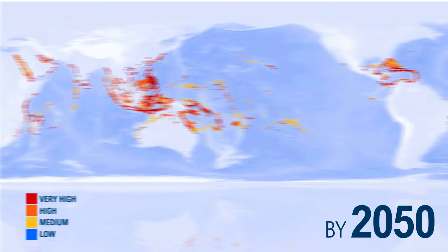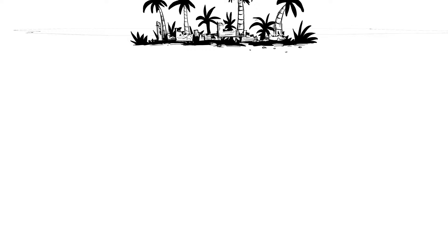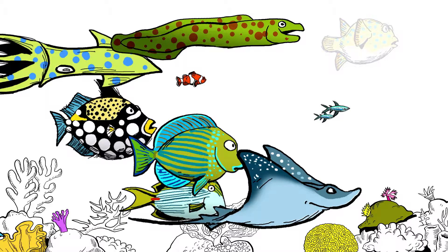Without coral reefs, we'll not only lose an important food source, but many communities will also lose their tourism and fishing economies, and the coasts will be much more vulnerable to storms and erosion. We'll also lose an enormous amount of biological diversity, which will close the door on all kinds of new potential medicines and other benefits.